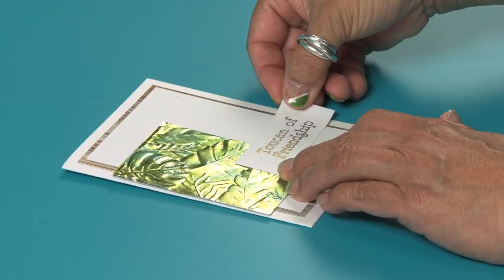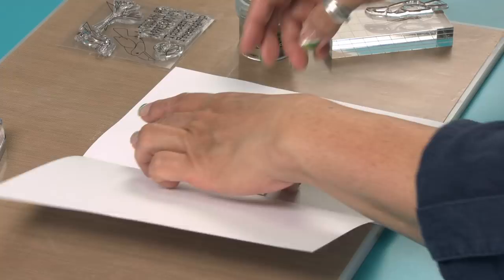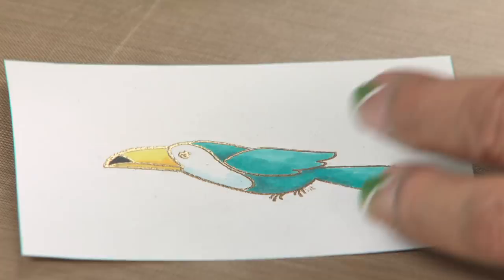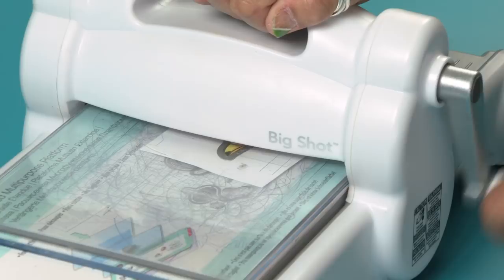Stamp the larger toucan on white paper using the gold embossing powder and heat emboss. Use markers to color. Use a coordinating die and die cut the toucan. Use foam adhesive to adhere above the sentiment.